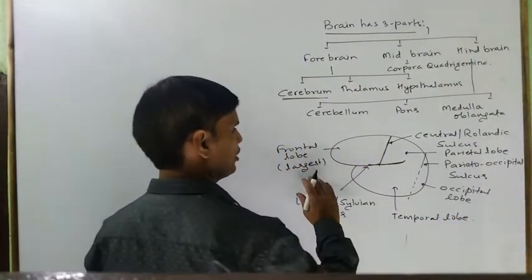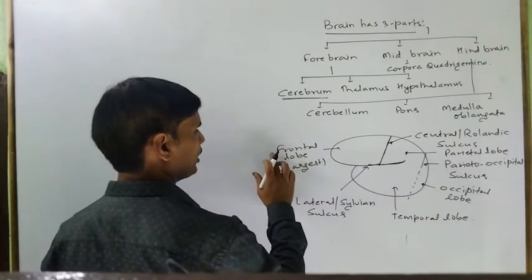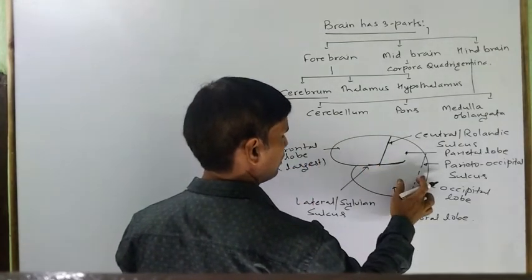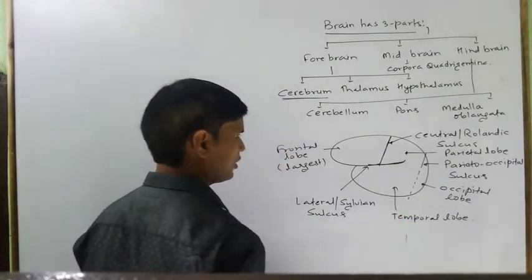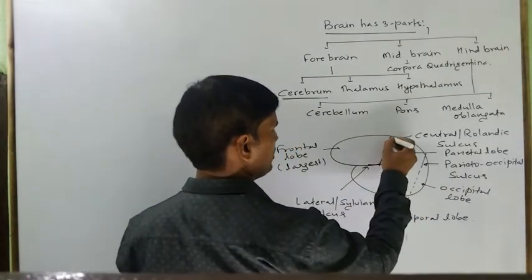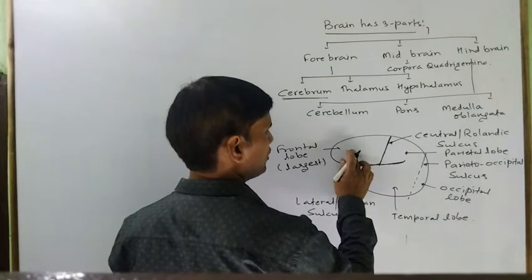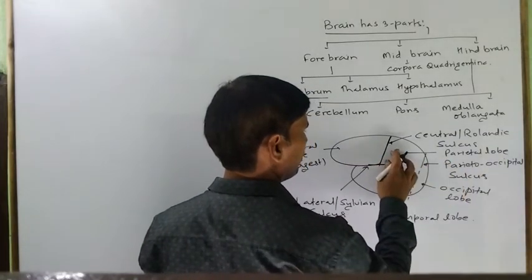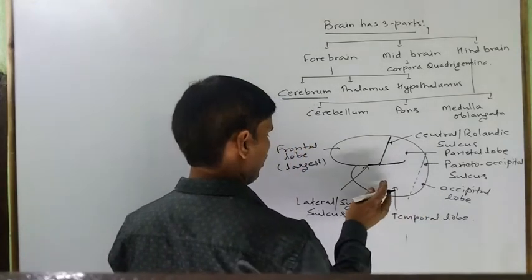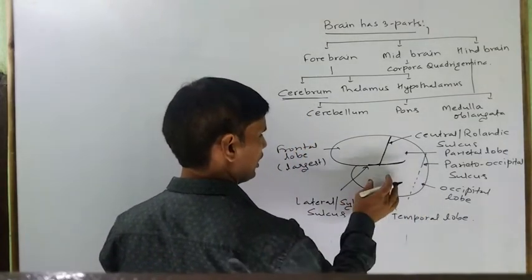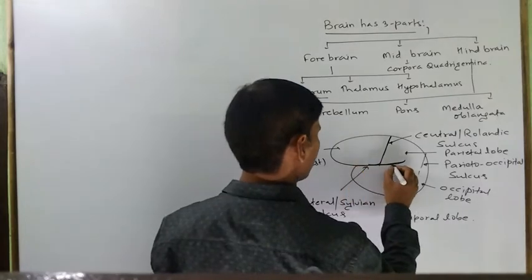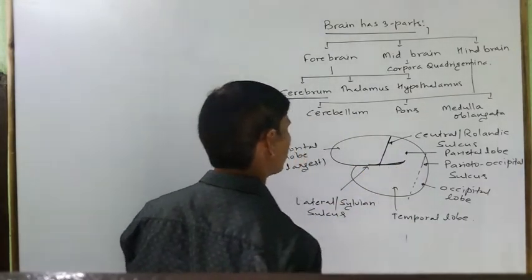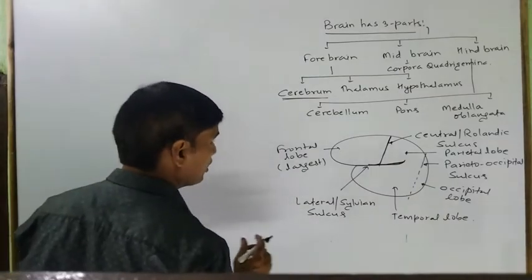यानि कि यह जो Brain है इसको चार Lobes में बाँटा गया है: Frontal, Parietal, Occipital और Temporal। Central Sulcus जो Frontal को Parietal से अलग करता है, Parieto-Occipital Sulcus Parietal को Occipital से अलग करता है, और यह जो Lateral Sylvian Sulcus है वो incomplete होता है।